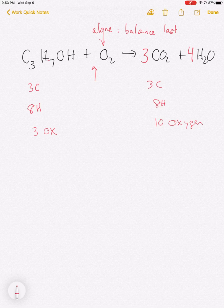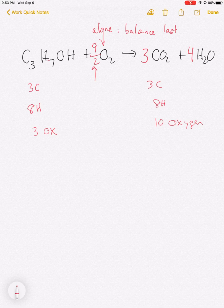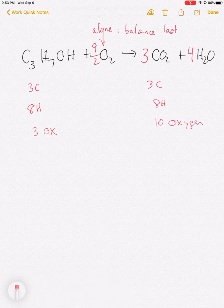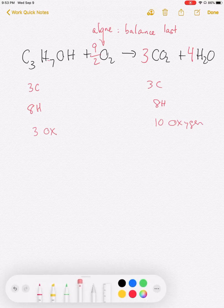Well, the only way I can get nine since I have an O2 is to put a coefficient of nine halves or 4.5 here. Nine halves or 4.5. And so at this point, nine halves times two is nine plus one is 10 oxygens. So at this point, I have a balanced equation.